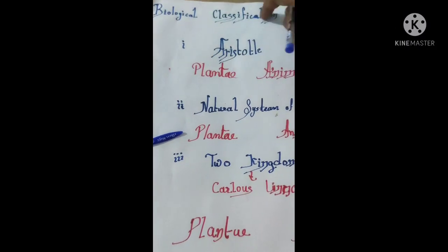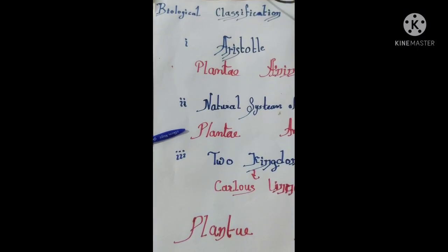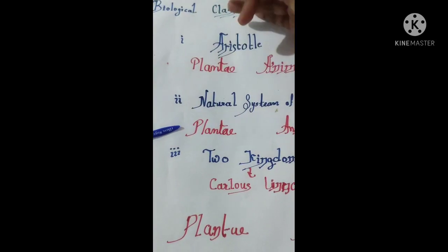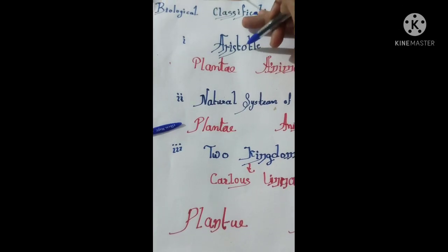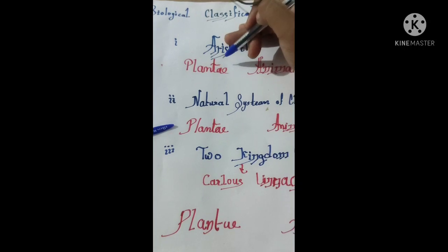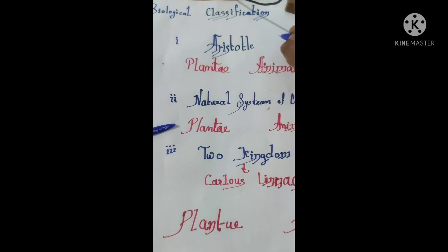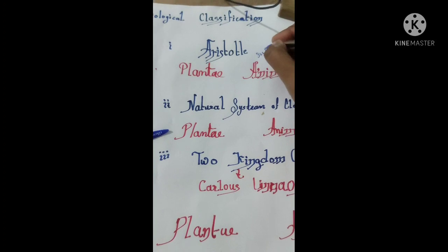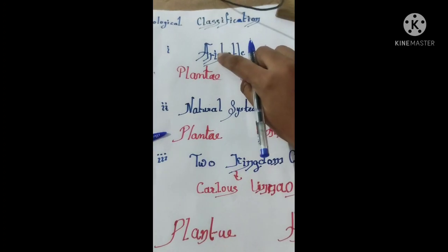Okay guys, so biological classification — I will let you know how to remember it very easily. Number one is Aristotle's classification: two kingdoms, Plantae and Animalia. This was in 300 BC, before Christ.